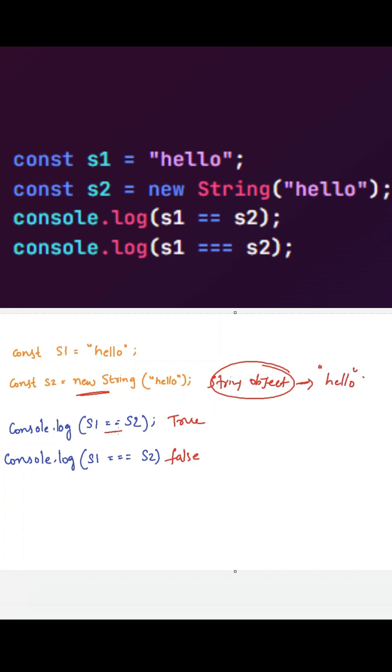If you consider this line, we are using loose equal to operator between the string and an object. So whenever we use this, JavaScript will try to convert this object into a string by using the type coercion concept.